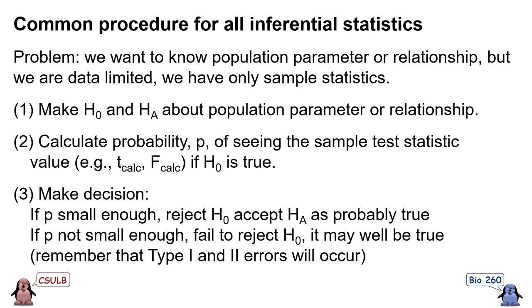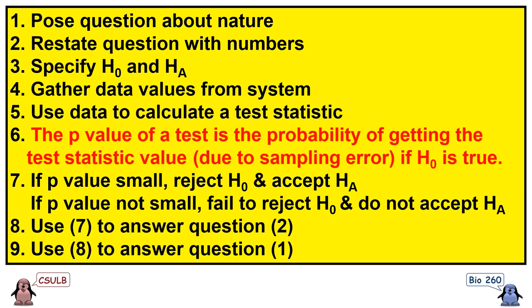Finally, we make our decision. If p is small enough, then we reject the null hypothesis and accept the alternative hypothesis as probably true. If p is not small enough, then we would fail to reject the null hypothesis and conclude that it may well be true. And we always need to keep in mind that whatever decision we make, we may be making a type 1 or type 2 error.